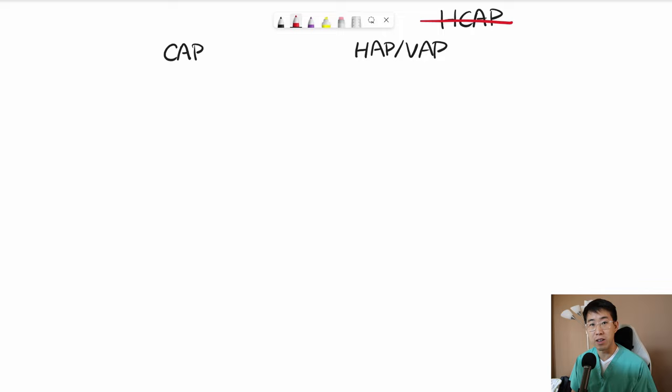Instead of saying somebody has healthcare-associated pneumonia because they lived in a nursing home or they saw a clinic visit a week ago and they need broader spectrum antibiotics, this is no longer something that we need to do. Rather, it's just differentiating between CAP and hospital-acquired pneumonia or ventilator-associated pneumonia.